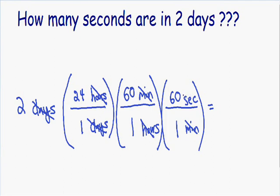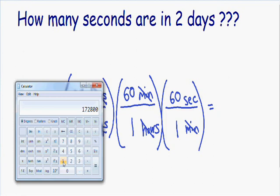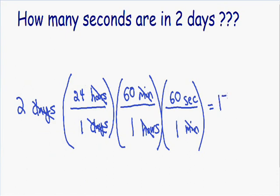So now we have almost finished this problem — we're in the right units, we just need to multiply everything. We have 2 multiplied by 24, multiplied by 60, multiplied by 60, divided by 1 times 1 times 1. I'm just going to type this in the calculator, and that is equal to 172,800 seconds. So how many seconds are in two days? We have 172,800 seconds in two days. I hope you enjoyed this video and this gave you a better idea of how to convert any type of units. I will see you in my next one.